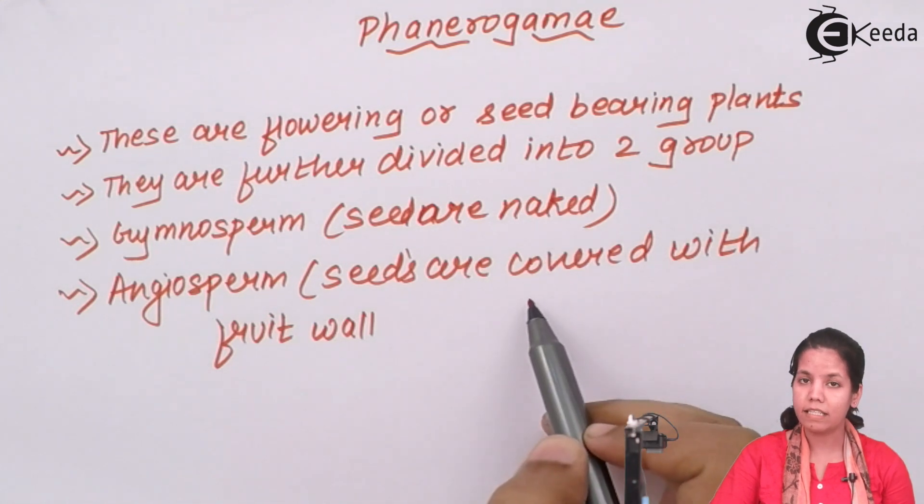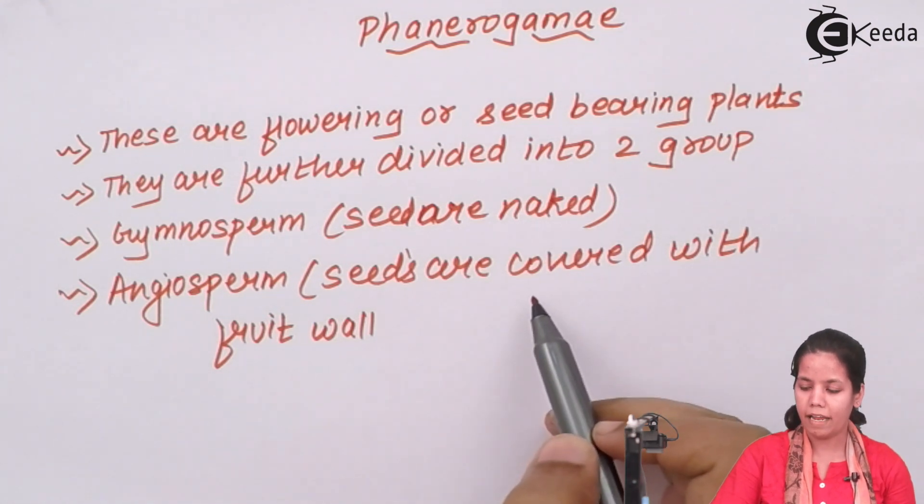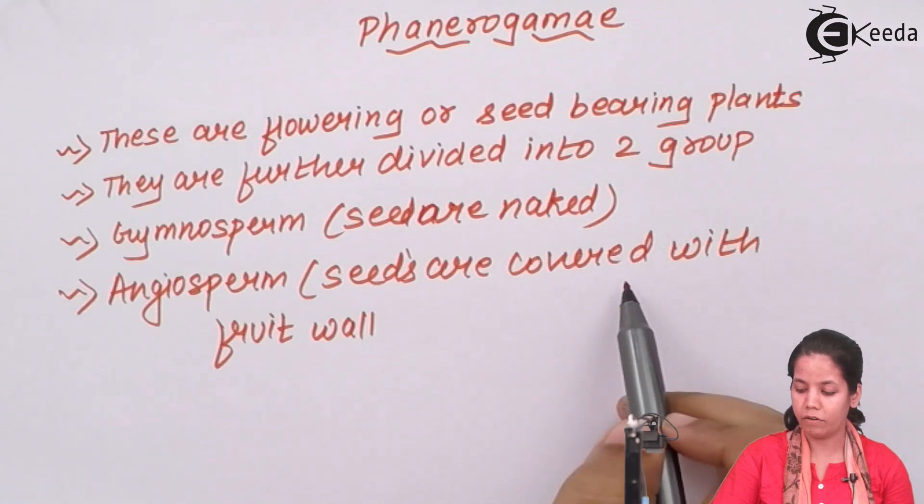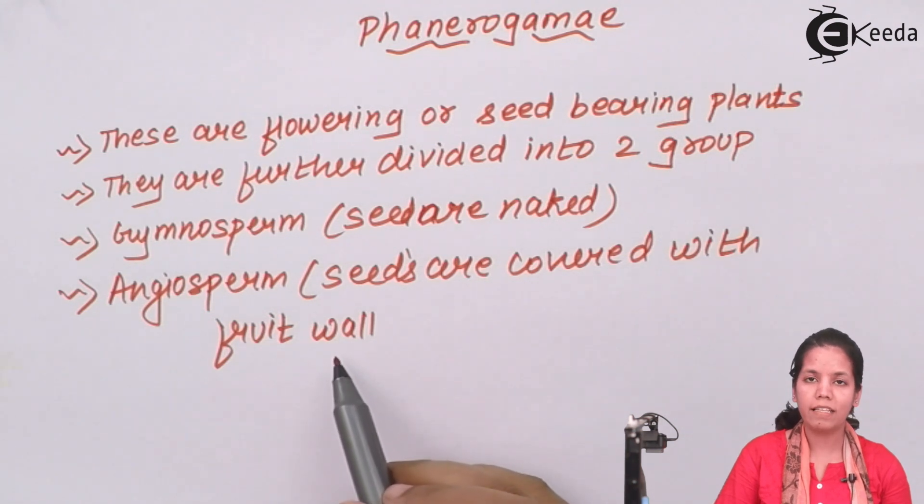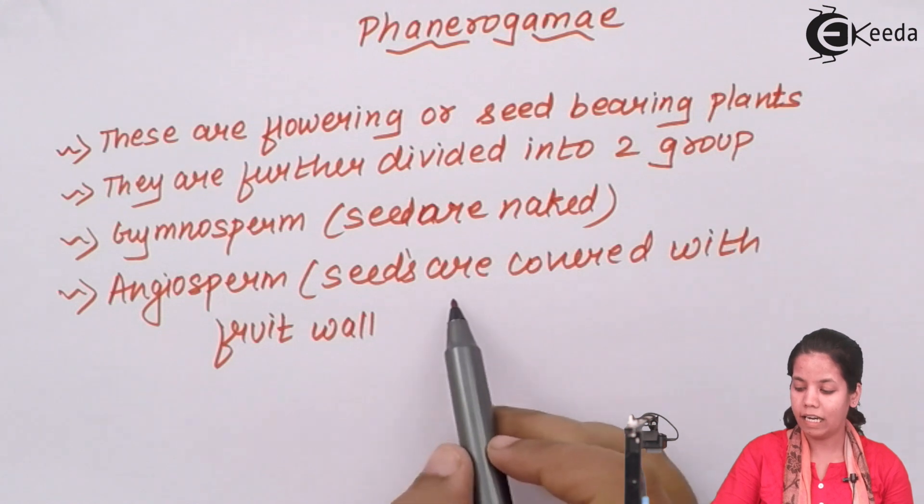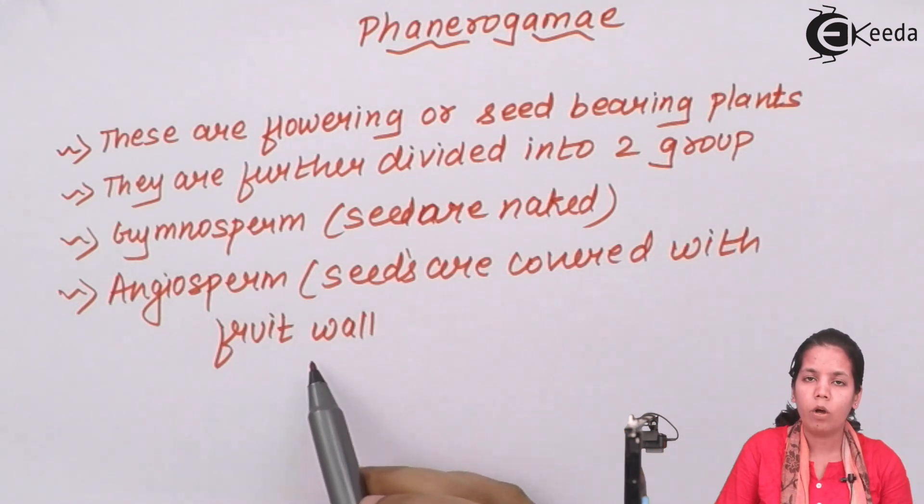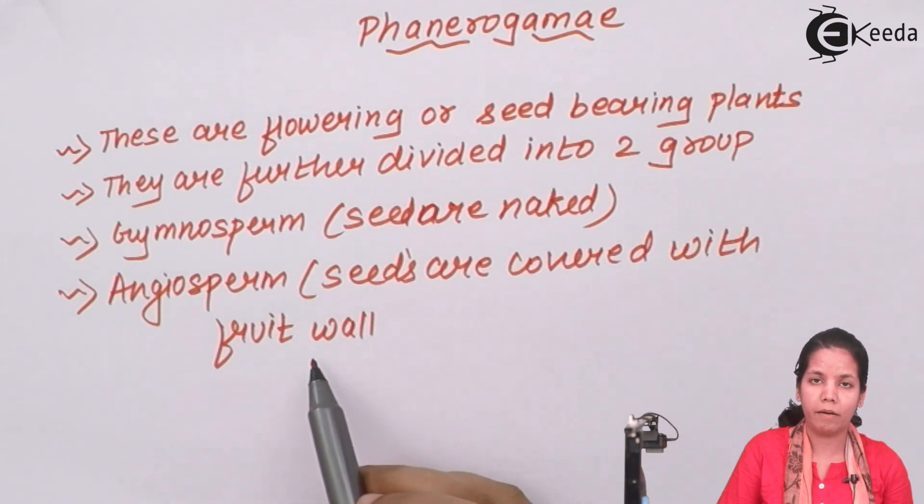The next category is the angiosperms. When I talk about angiosperms, these are the seeds which are covered with a fruit wall. Obviously, there was a fruit which was in picture. So there would be a flower, there would be sexual reproduction. And hence, the result was a seed that was covered with a fruit wall or you can say the pericarp or epicarp region.